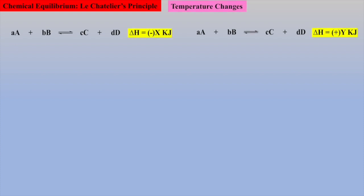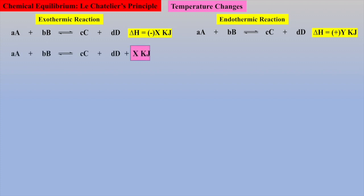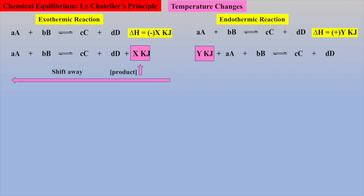To consider temperature changes, we have to include changes in enthalpy. The first equilibrium is exothermic and the second is endothermic, as indicated by the negative and positive signs for delta H. For an exothermic reaction, energy is liberated — so if we treat energy as a product, the equilibrium can be rewritten. Similarly, for an endothermic reaction, energy is required as a reactant. We have already demonstrated that an increase in concentration of product will cause the equilibrium to shift away from the increase. Thus, if we increase temperature, or energy, and treat energy like a product, there will be a shift away towards reactants, which will change the concentrations of reactants and products. These changes in concentrations will afford a new equilibrium constant, which is why equilibrium constants are unique for a given temperature.